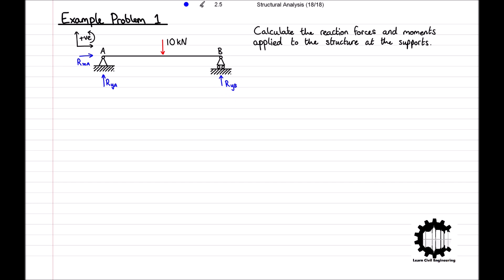As the roller support only transmits forces perpendicular to the support, we only have a vertical reaction force denoted RYB. Note that it doesn't matter which direction we draw our reaction forces along the line of action, as we do not know the sense of the forces. Here we have drawn the vertical reaction forces in the upwards direction. If we calculate our reaction forces to be positive, this means they are acting upwards; if negative, they act downwards. This concept also applies to the horizontal reaction force.